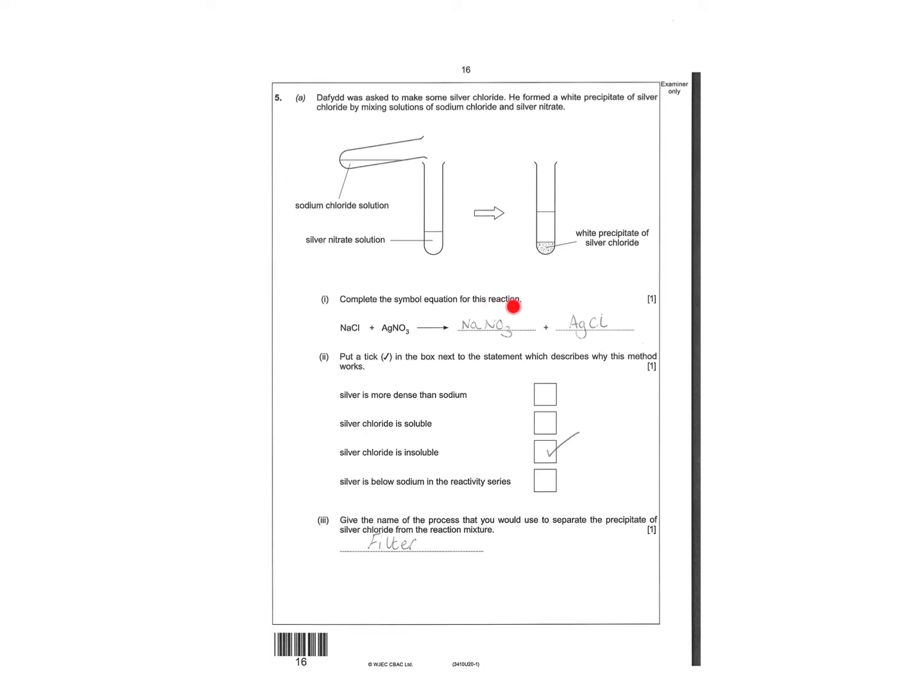Complete the symbol equation for this reaction. The sodium is going to steal the nitrate and then you're going to end up with silver chloride. Put a tick next to the box which describes this. Put a tick next to the box next to the statement which describes - silver chloride is insoluble so you make that precipitate. Give the name of the process used to separate the precipitate of silver chloride - would be filtering.